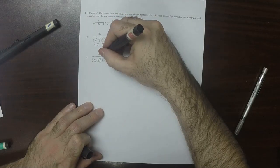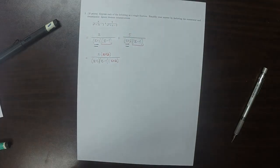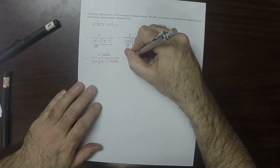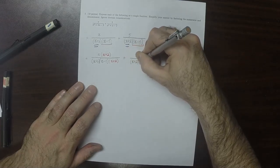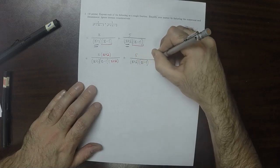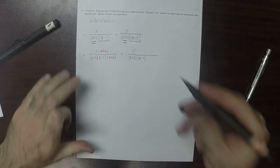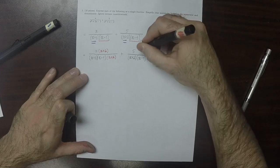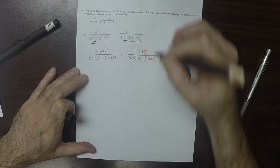But then, to undo that, put an x plus 2 there. And then plus 5 over x plus 2 times x minus 1. And this term is missing an x plus 3. So then, I put it there, and to undo it, x plus 3.